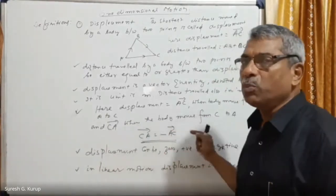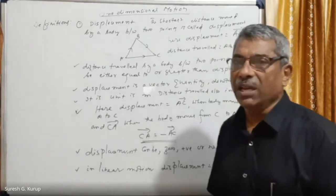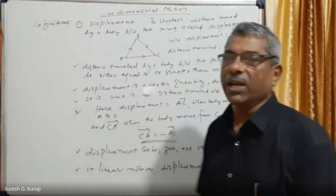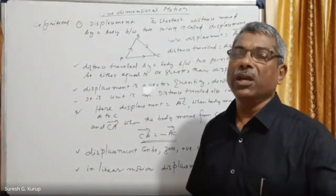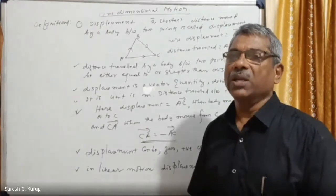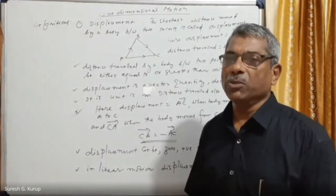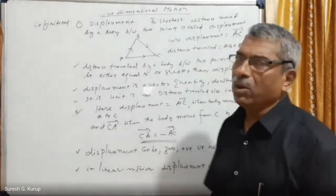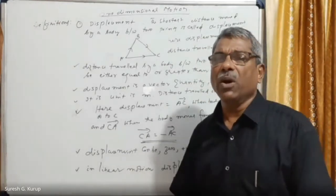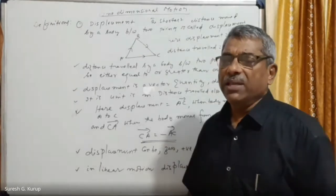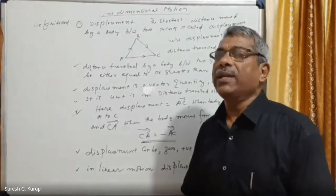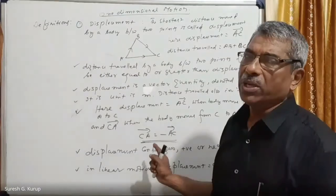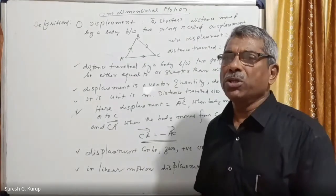If the body travels from the origin and comes back to the origin itself, then displacement is equal to zero. If it goes in the negative x-axis direction, displacement can be negative. So displacement can be negative, positive, or zero, while distance traveled is always positive.